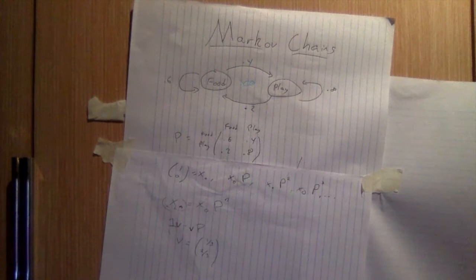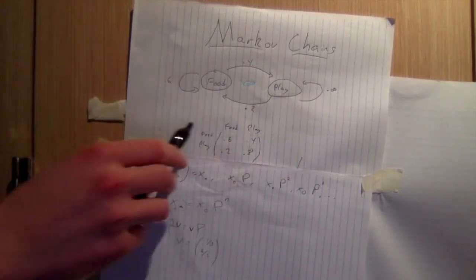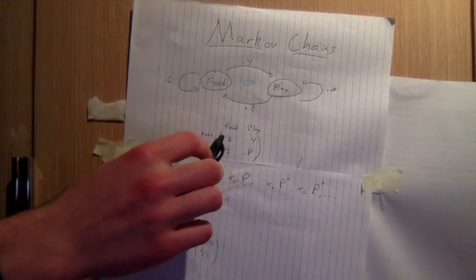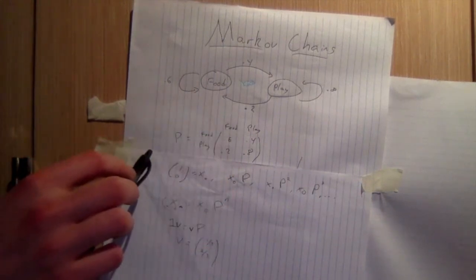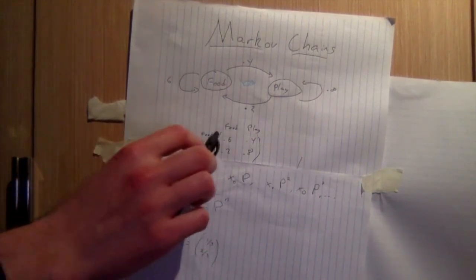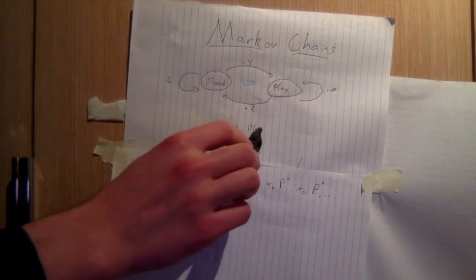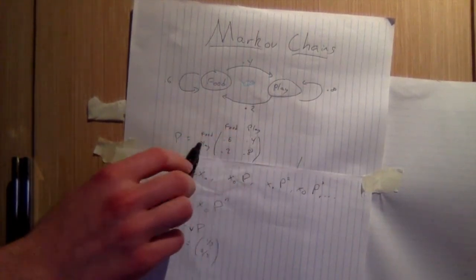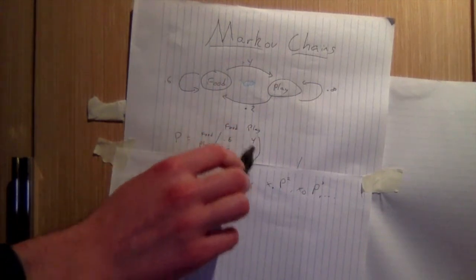And so one way you might think to store this data is in the matrix like this. So given that we start at food, the chance that we go to food is 0.6. Given that we start in this row, the chance we go to the state associated with this column is given by this entry. So given that we start here, the chance we go for play is 0.8.